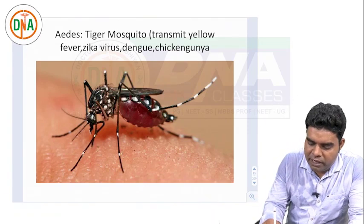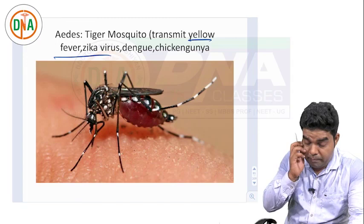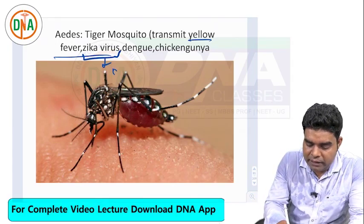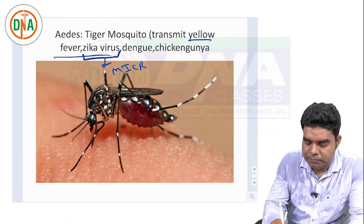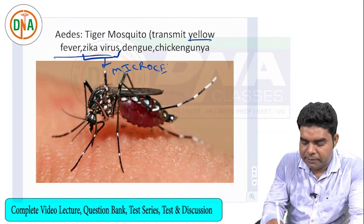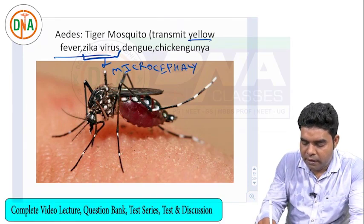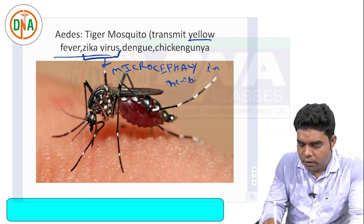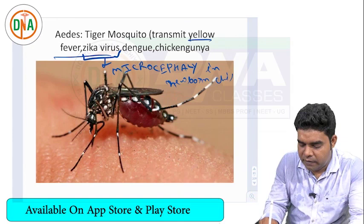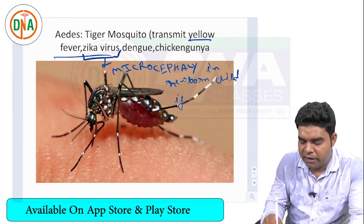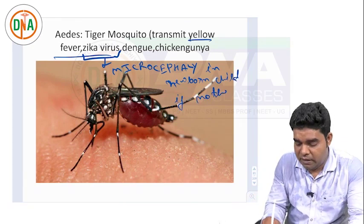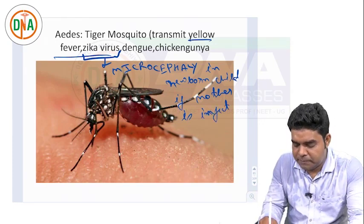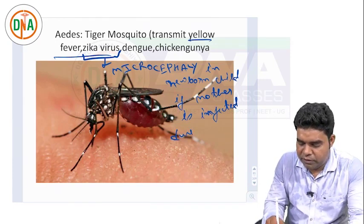Yellow fever and Zika virus are topics that are asked again and again. Zika virus causes microcephaly — a small head — in the newborn child if the mother is infected during pregnancy. So if the mother is infected by Zika virus during pregnancy, the child will have a small head.